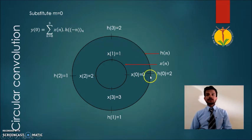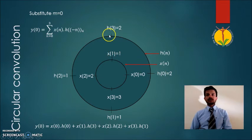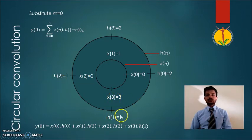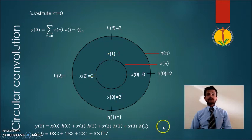All samples of h of minus n are plotted along the clockwise direction on the outer circle. Now performing the multiplication and addition: x of 0 times h of 0, plus x of 1 times h of 3, plus x of 2 times h of 2, plus x of 3 times h of 1. The result equals 7, which is the first sample of the circularly convolved sequence.